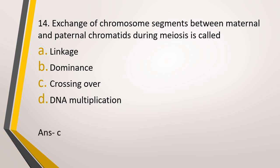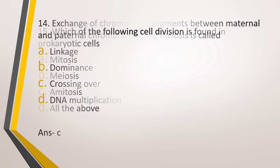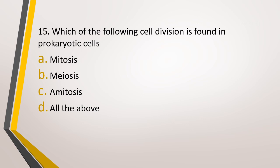Question number 15. Which of the following cell division is found in prokaryotic cell? Option A: mitosis, option B: meiosis, option C: amitosis, or option D: all the above. The type of cell division seen in prokaryotic cells. The correct answer is option C, that is, amitosis.